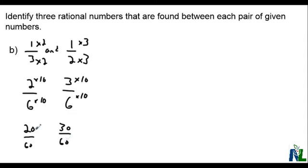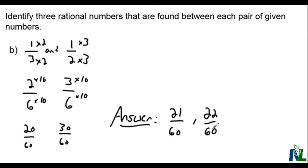Well, now it's just a matter of figuring out what is in between 20 and 30 and writing that over the same denominator of 60. So our answer could be any one of 21 over 60, 22 over 60, and you get the point, 23 over 60.